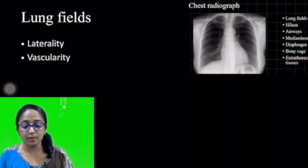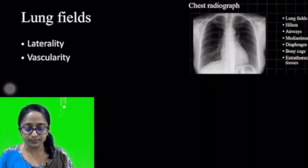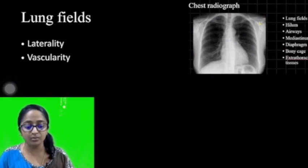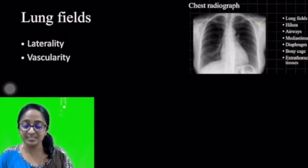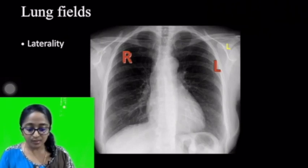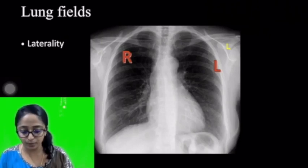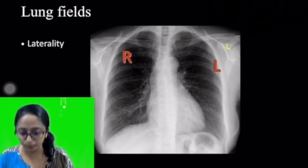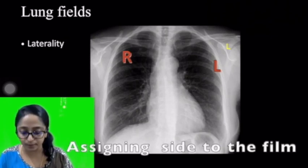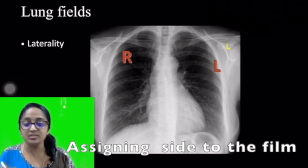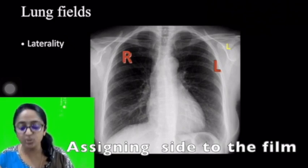First, I will be talking about the lung fields. Regarding the lung fields, I will be discussing laterality as well as vascularity. As you can see, the black area — also referred to as the radiolucent area — represents the lung field. As soon as you get a film, you have to assign the side, that is, which one is right and which is left.